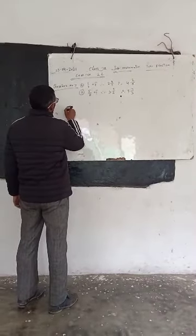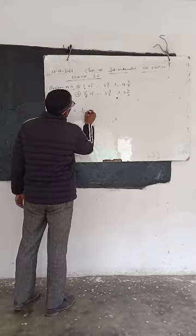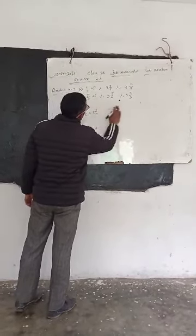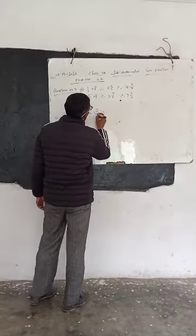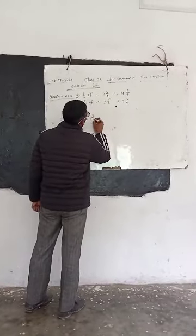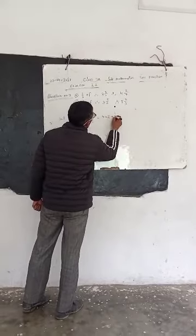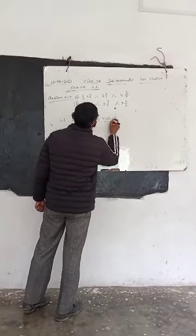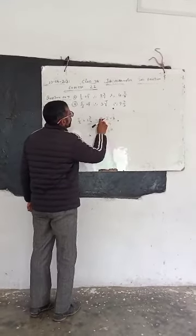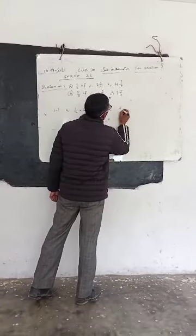We will start with part A: to find 1 half of 2 and 3 by 4. We will change the mixed fraction into an improper fraction. We multiply the denominator by the whole number and add the numerator: 4 times 2 is 8, and 8 plus 3 is 11, so we get 11 divided by 4.